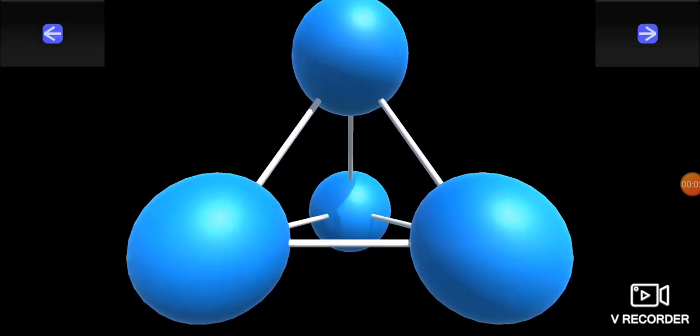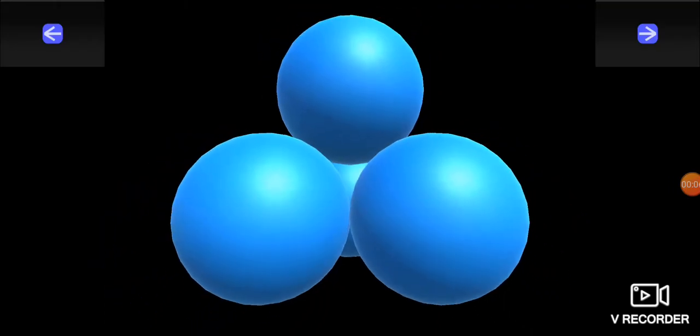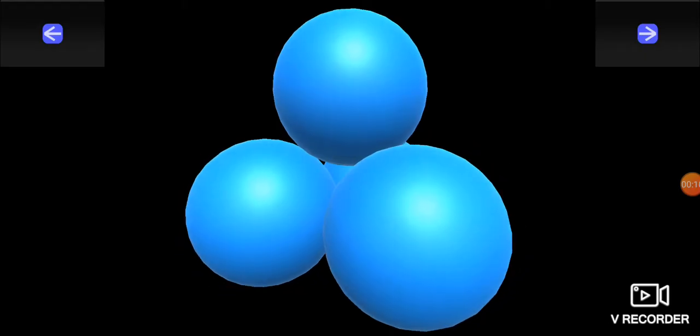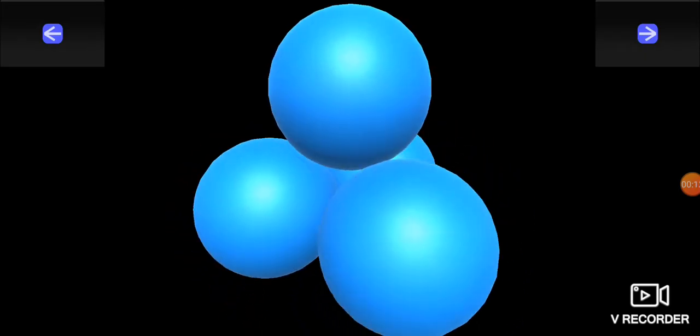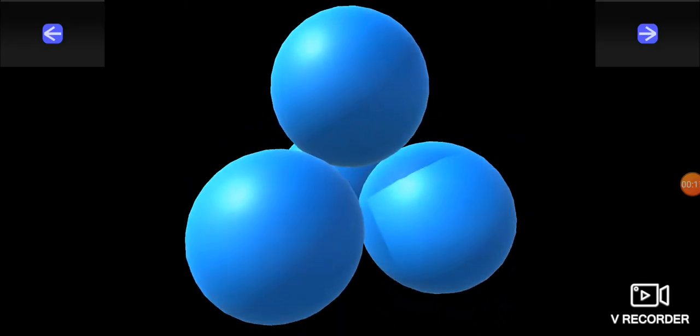This is how the octahedral void is formed. By combining four atoms which are in touch with each other, there is a little space left between these four atoms. That space is considered to be the tetrahedral void.